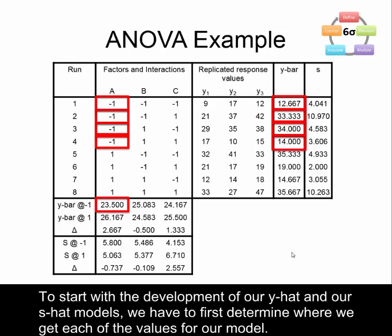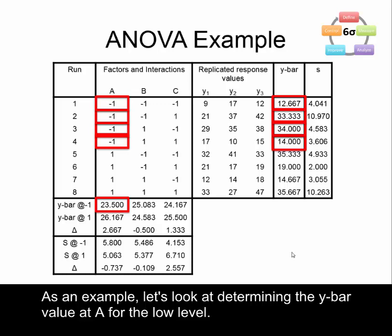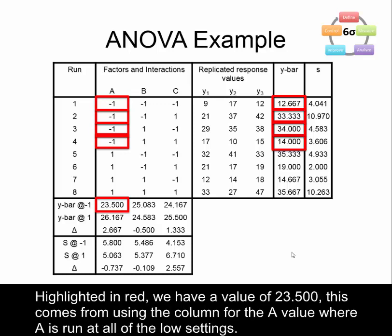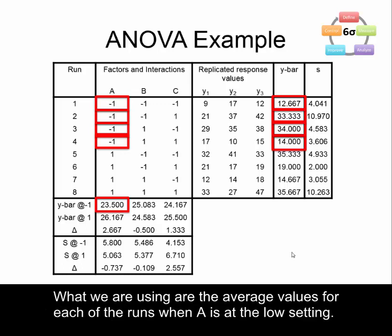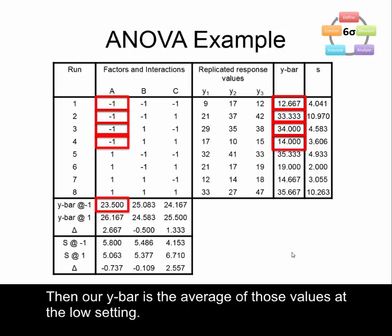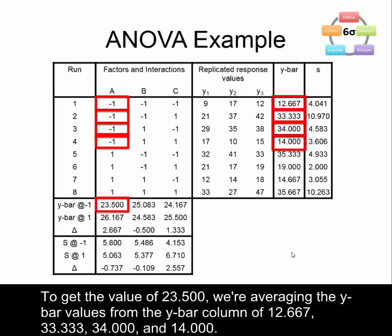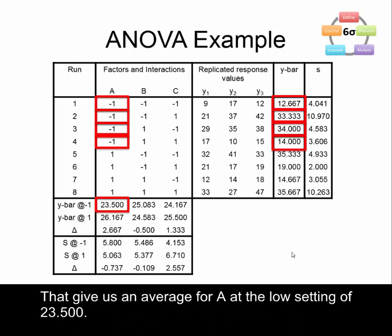To start with the development of our y-hat and s-hat models we first have to determine where we get each of the values for our model. As an example, let's look at determining the y-bar value at A for the low level, highlighted in red as 23.500. This comes from the column for factor A where A is run at all of the low settings, corresponding to y-bar values of 12.667, 33.333, 34, and 14. Our y-bar is the average of those values, giving us 23.50.